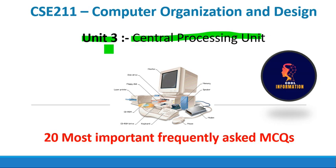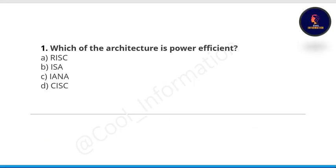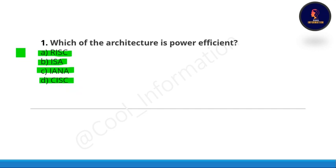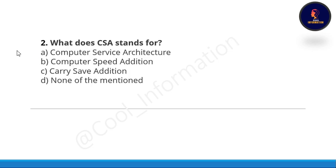Without wasting any time, let's proceed with the first question: which of the following architectures is power efficient? Option A: RISC. Option B: ISA. Option C: IANA. Option D: SIS. The correct option is option A, which is RISC.